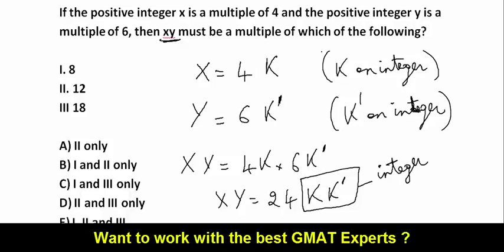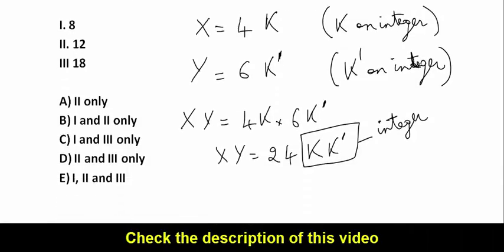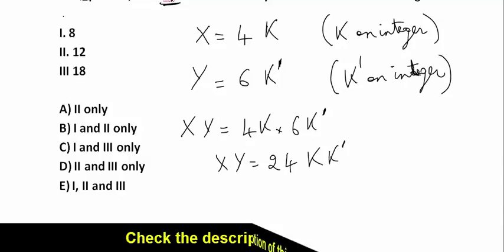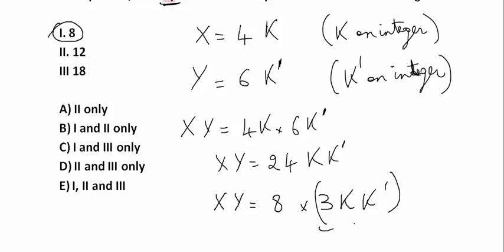x times y must be a multiple of which of the following? Let us examine this. Let us test 8. Is x times y a multiple of 8? Yes, because x times y is equal to 8 times 3 times k times k prime — it's 8 times an integer.